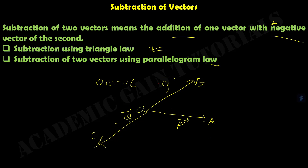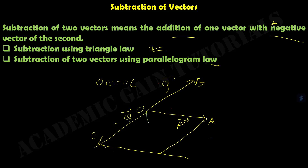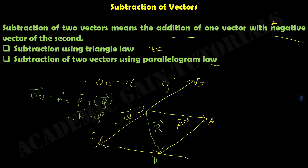If we draw a parallelogram using OA and OC, then the diagonal of this parallelogram will give us the resultant vector R. So if we write this point as D, then OD equals R equals P plus minus Q, or we can write this as P minus Q. This is known as subtraction of two vectors using parallelogram law.